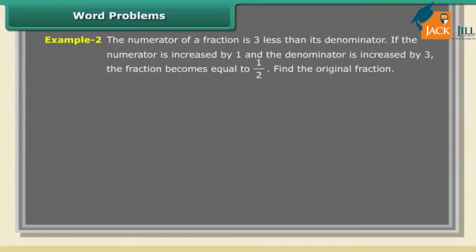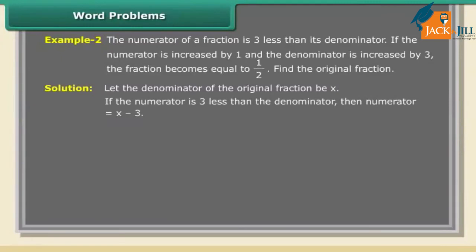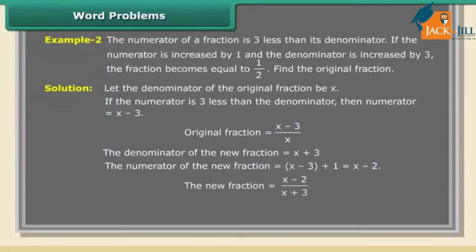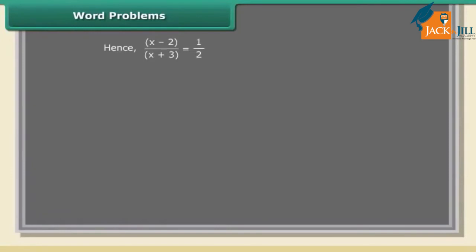Example 2: the numerator of a fraction is 3 less than its denominator. If the numerator is increased by 1 and the denominator is increased by 3, the fraction becomes 1/2. Find the original fraction. Solution: let the denominator be x, so the numerator is x − 3. The original fraction is (x − 3)/x. The new fraction is (x − 2)/(x + 3) = 1/2.